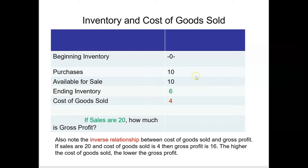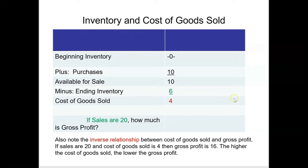Beginning inventory plus purchases equals total goods available for sale. You can never sell more than what you started with plus what you purchased. So if total available for sale is 10 — because beginning inventory was zero and purchases are 10 — and six are left at the end, then cost of goods sold must be four. Beginning inventory plus purchases equals total available for sale, subtract what's still there at the end, and that's the cost of what was sold.